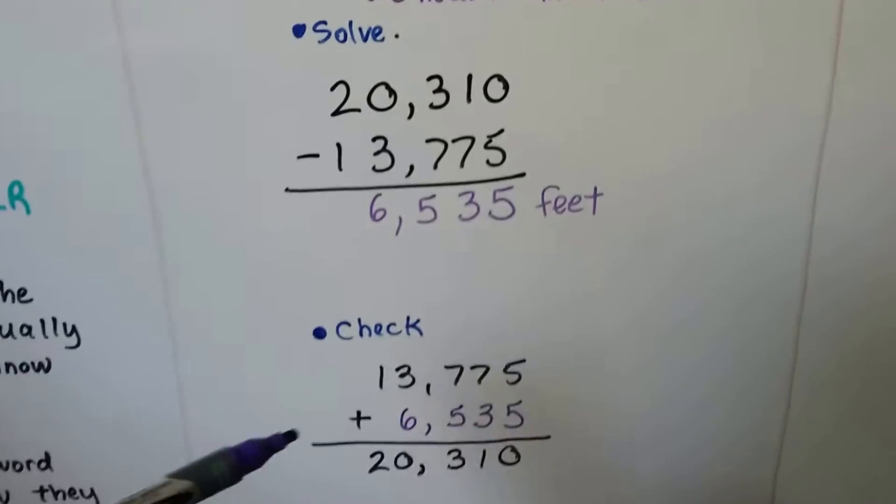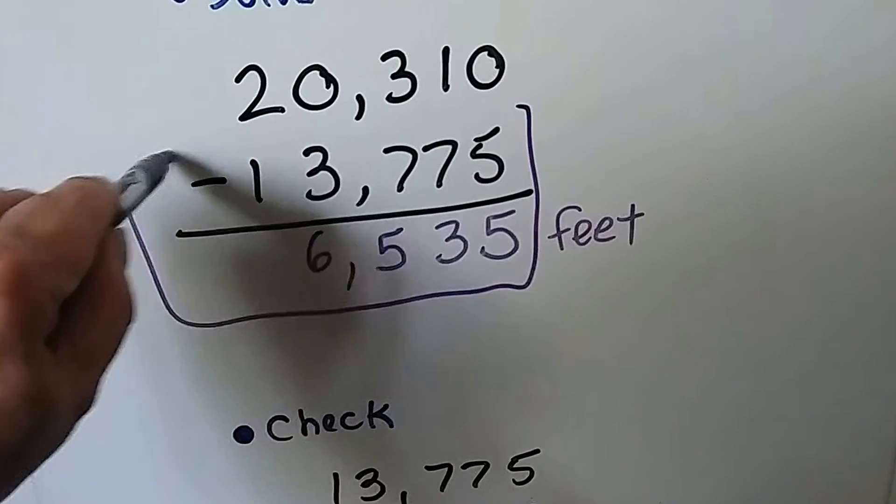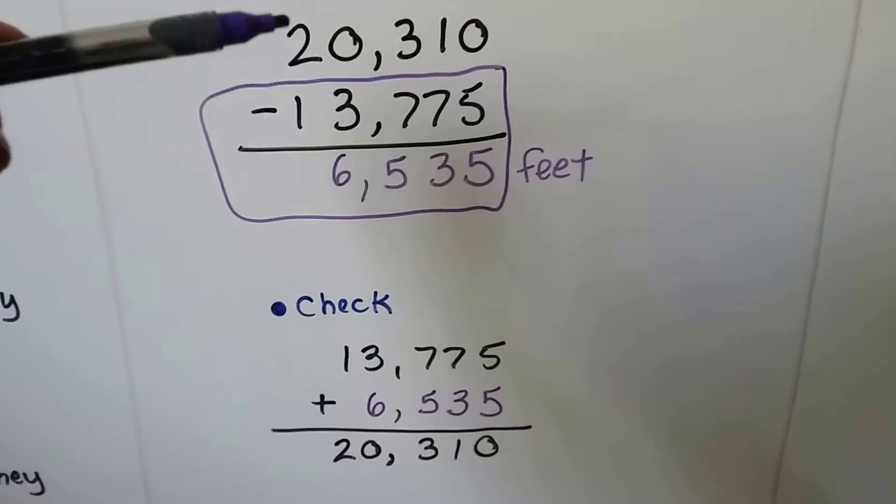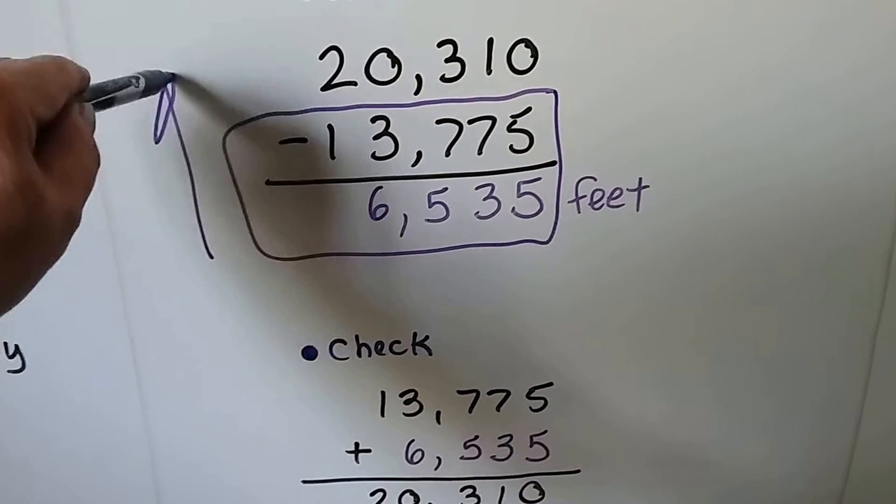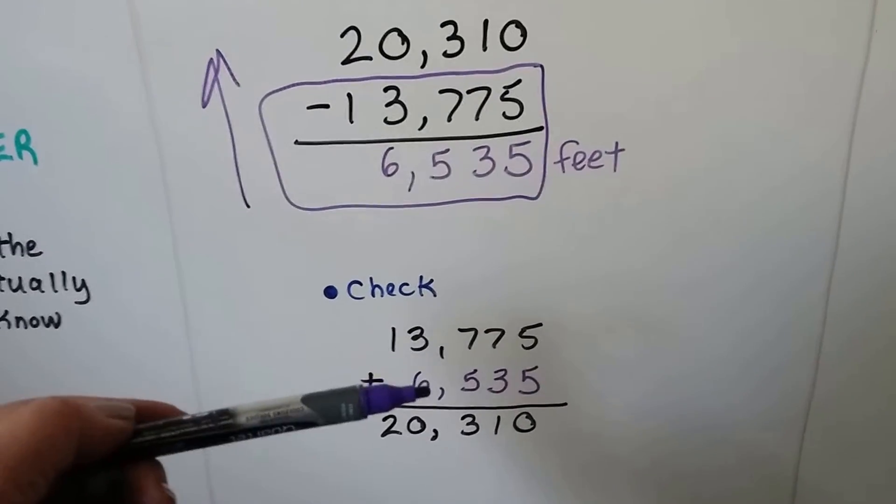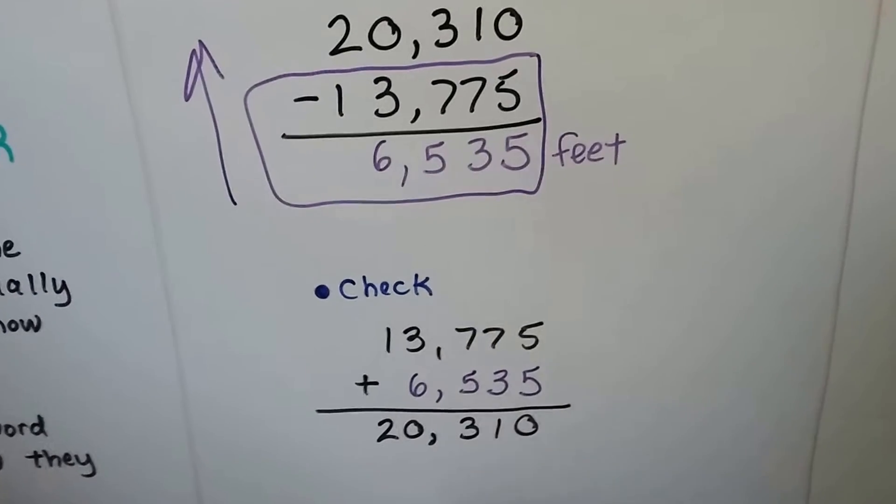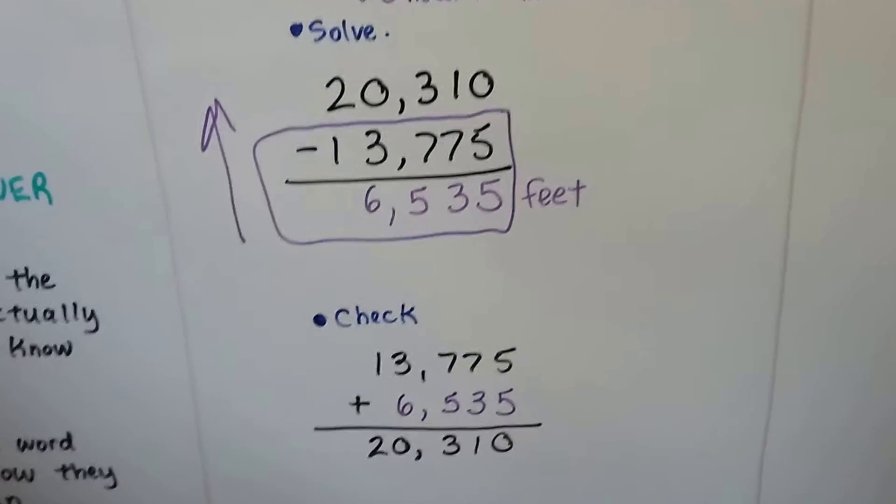And we can check it. If we take these two numbers and add them, they should total the original number. We're just going in reverse. The opposite of subtraction is addition and the opposite of addition is subtraction. All these numbers are going to be grouped as a family.